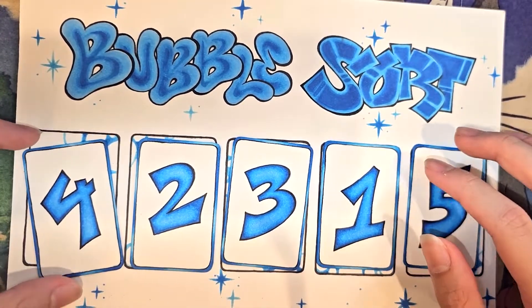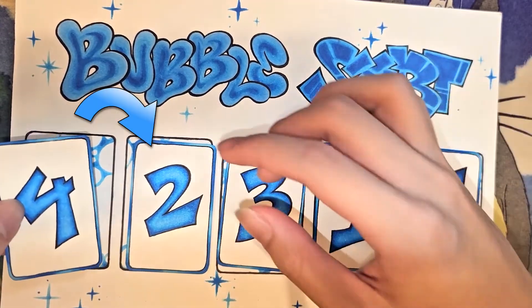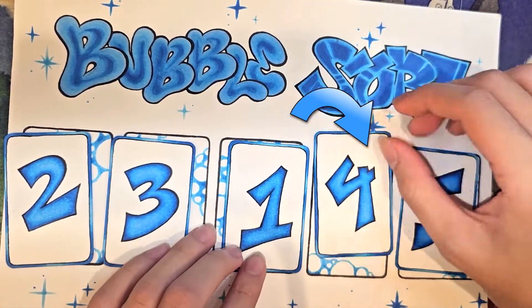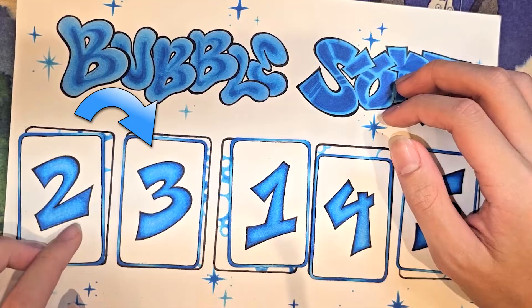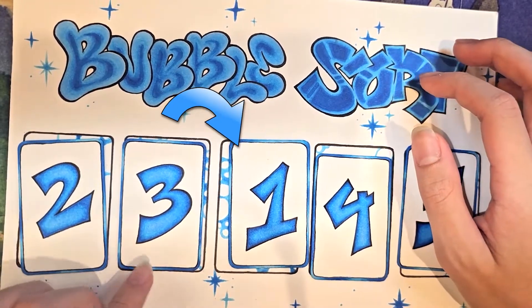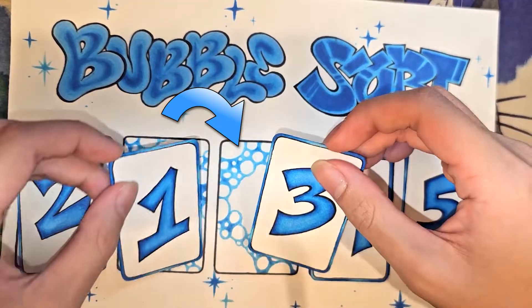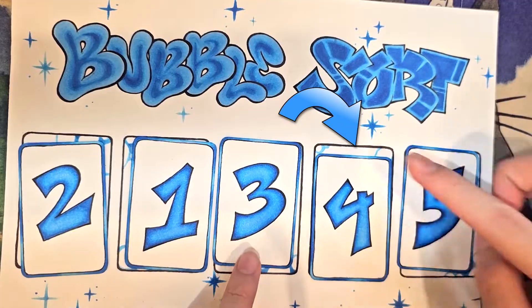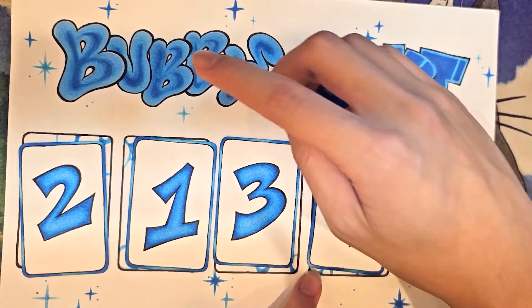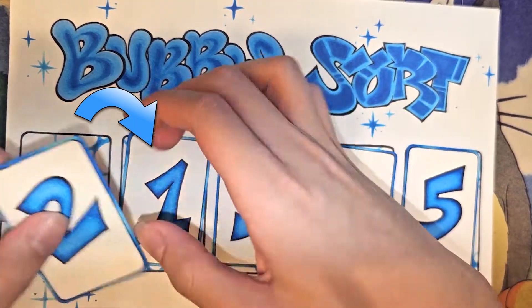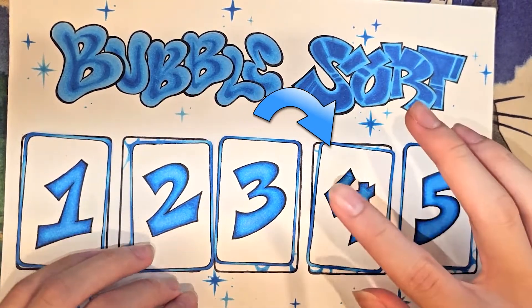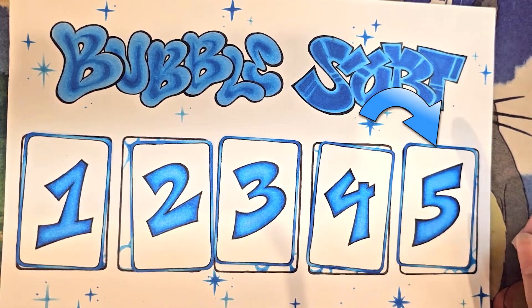Now this goes again three more times. 4 is greater than 2, so it swaps. Greater than 3, so it swaps. Greater than 1, so it swaps. Now it checks 2 is greater than 3, which is not true, so it passes. 3 is greater than 1, yes, so it swaps. 3 is greater than 4, no. 4 is greater than 5, no. Then it checks 2 is greater than 1, yes, so it swaps. 2 is smaller than 3, so it doesn't swap. 3 is smaller than 4, so it doesn't swap. And 4 is smaller than 5, so it doesn't swap.